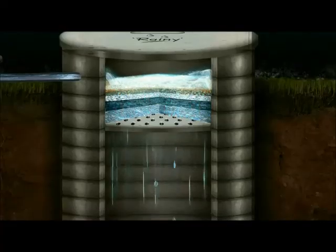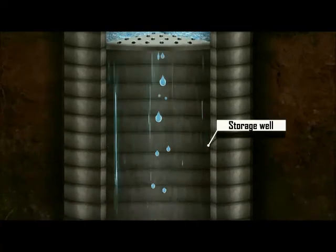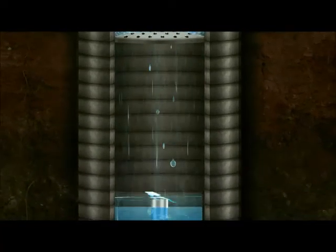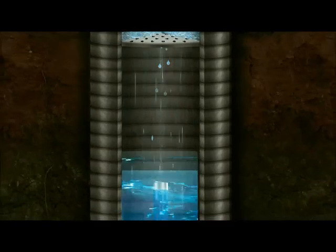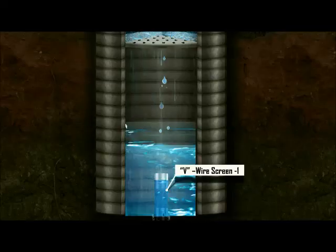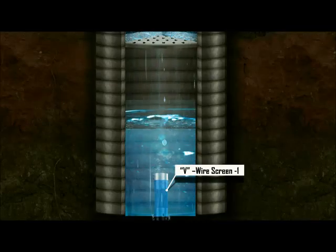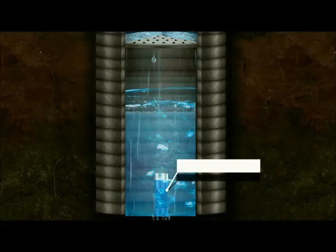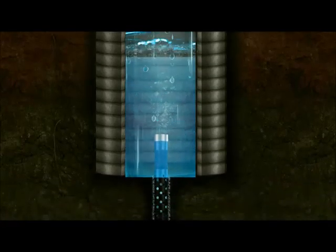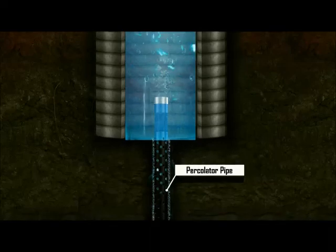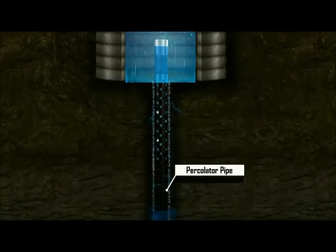The runoff water is accommodated in a specially designed storage well which creates a well defined water column, injecting large quantities of water into the deeper layers of the semi-impervious soil strata through the non-clogging V wire screens attached to the specifically designed percolator pipe.